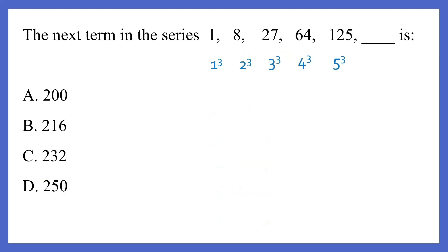Okay, the next question, the series is 1, 8, 27, 64, and 125. So looking at it, you can see that they are the cubes of numbers. 1 cubed is 1, 2 cubed is 8, 3 cubed is 27, 4 cubed is 64, 5 cubed is 125.